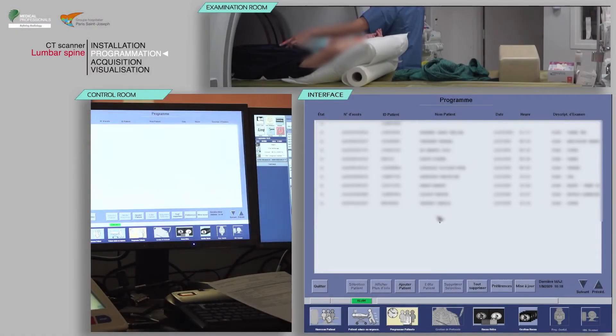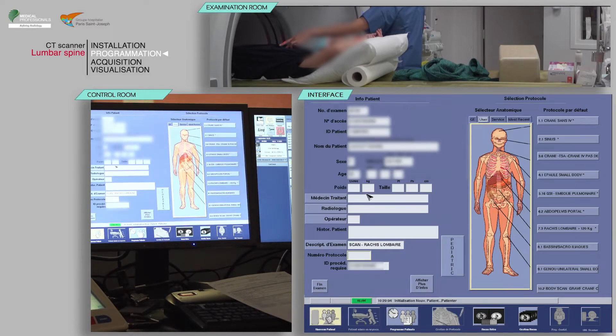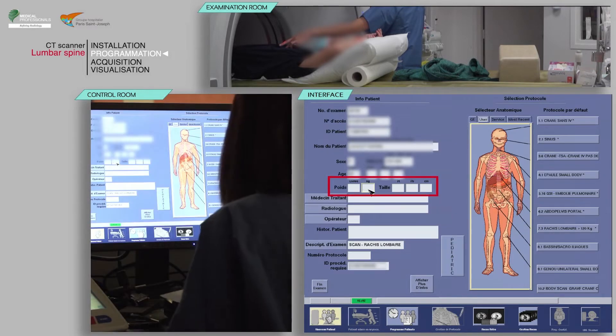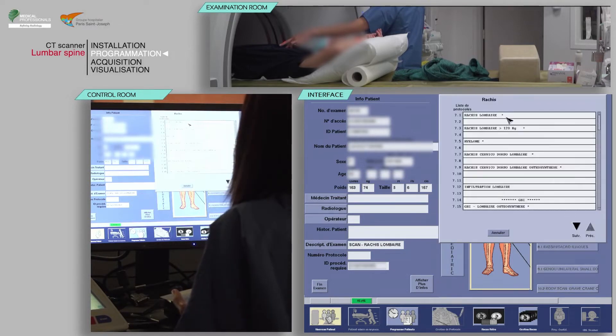Select your patient from the work list, then click on patient selection. Verify the pre-filled information and fill in the weight and height. Finally, choose the appropriate protocol.